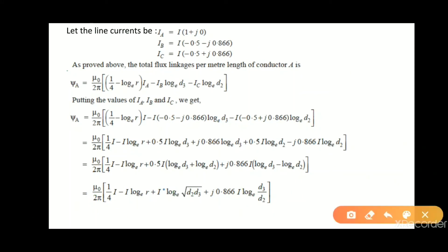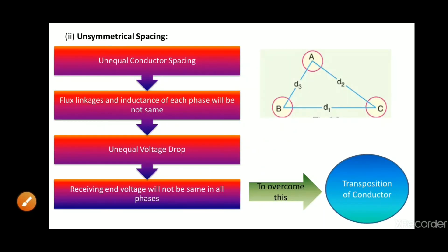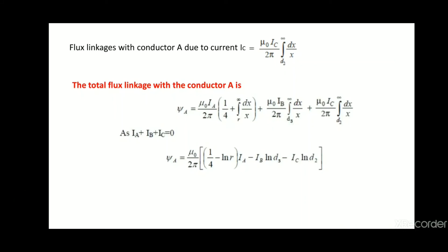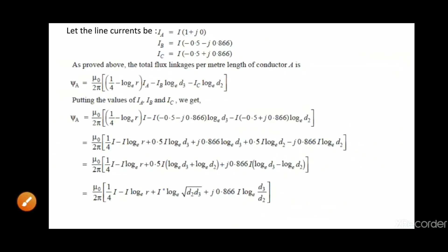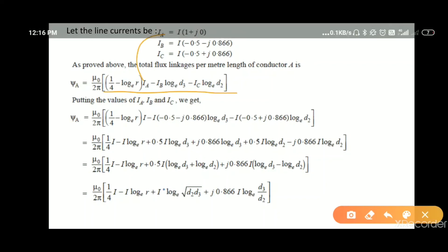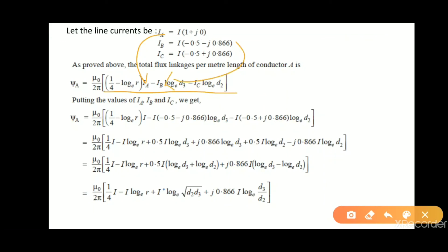As we have proved, the total flux per meter length of conductor A is given by the formula from the previous slide: ψA = mu₀/2π · [1/4 − log_e(r)·Ia − Ib·log_e(d3) − Ic·log_e(d2)]. We will substitute the values of Ia, Ib, and Ic over here. After substituting and solving, we obtain a result.